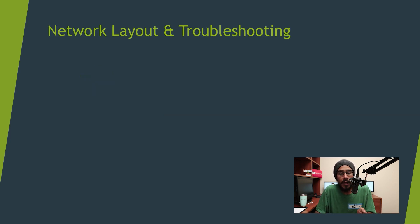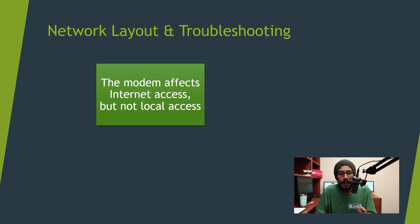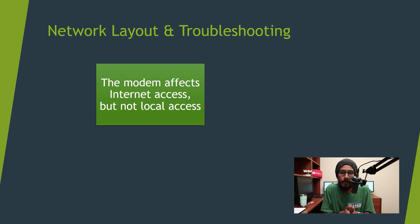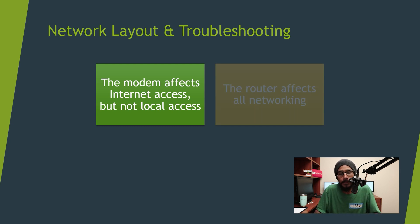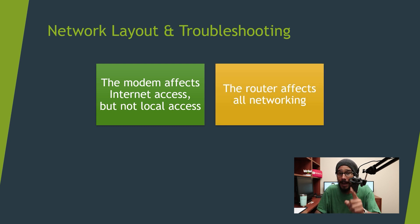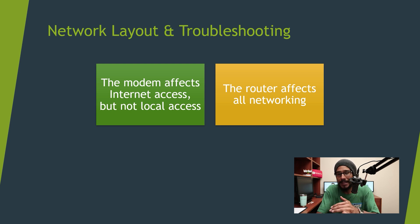For network layout and troubleshooting: the modem affects internet access but not local access. So if the modem goes down, you're still able to access all your printers and your file share. Now if the router goes down, it affects the entire network — that means you're not able to access your file share, printers, or the internet.